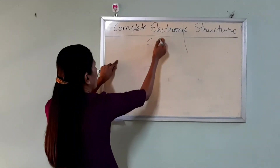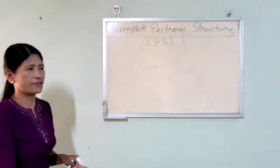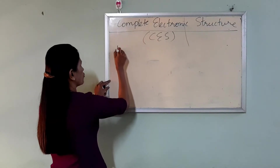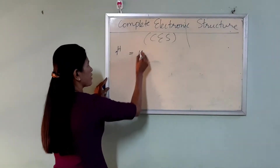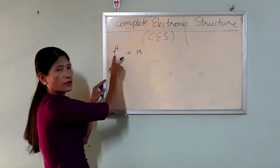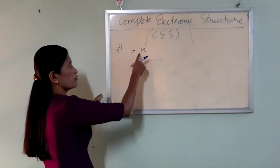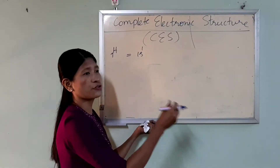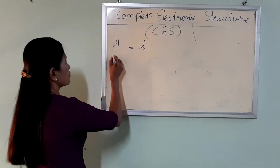We complete the electronic configuration. We start with 1H — choose 1S. The configuration is: 1S, 2S, 2P, 3S, 3P, 4S and then choose accordingly.